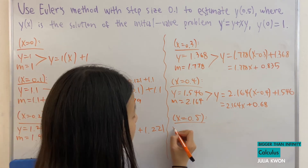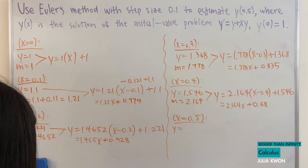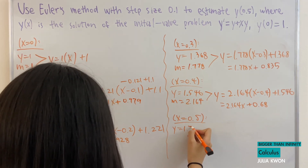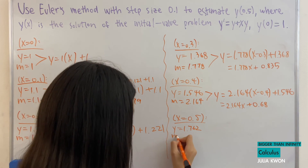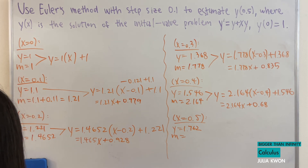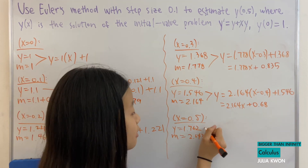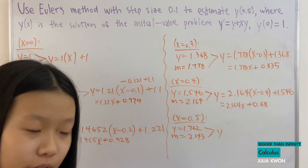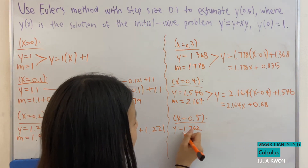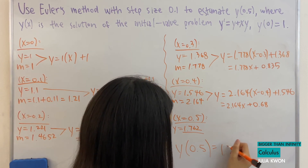Finally at x = 0.5, the approximate y value is 2.164(0.5) + 0.680 = 1.082 + 0.680 ≈ 1.762. The slope would be y' = 1.762 + (0.5)(1.762) ≈ 2.643, but we don't need to go further. Our answer is: when x = 0.5, y ≈ 1.762.